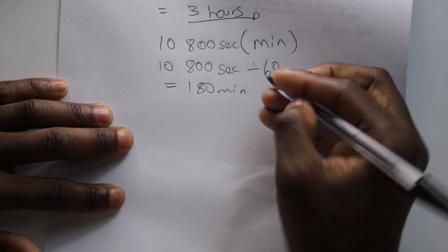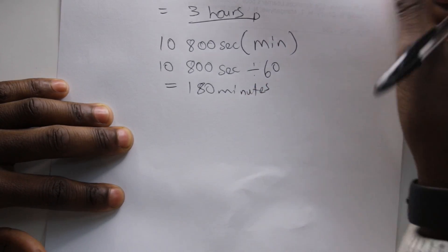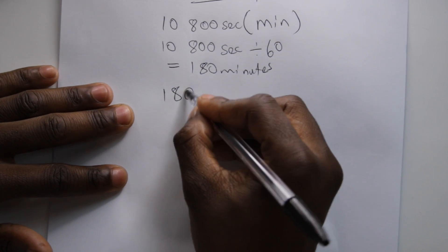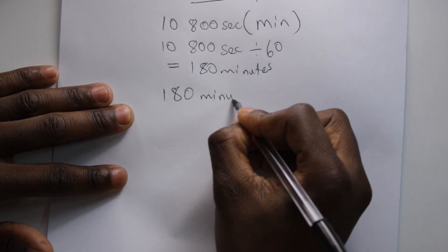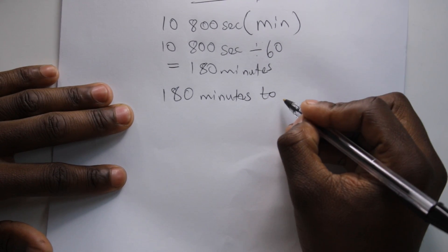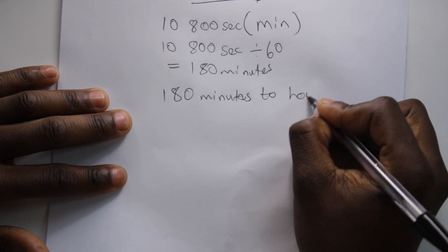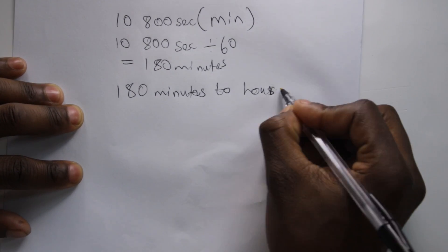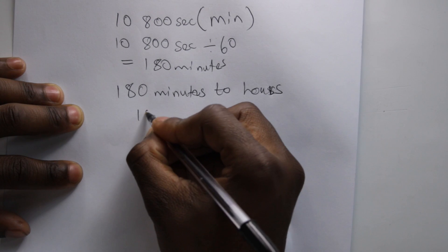Then 180 minutes to hours, 180 divided by 60, that will give us 3 hours.